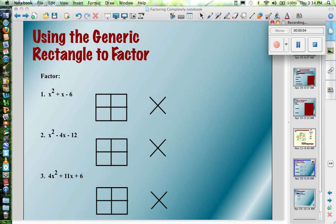Here's three more examples really quick on using a generic rectangle to factor. So if I start with x squared plus x minus 6,